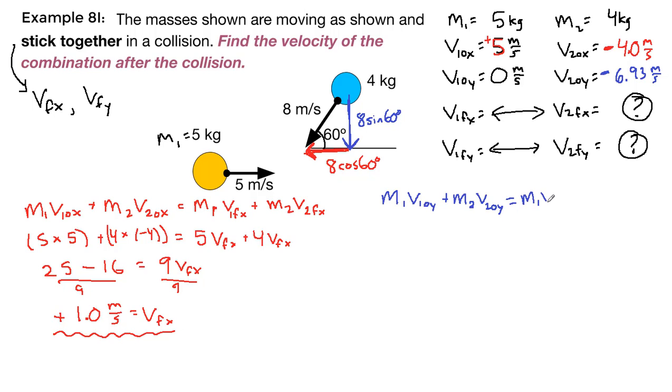All right, we write out the equation in the y direction. Again, all of these subscripts have meaning, so we want to make sure we're keeping track of everything properly. 5 times 0 plus 4 times negative 6.93 is equal to 5 v final y plus 4 v final y.